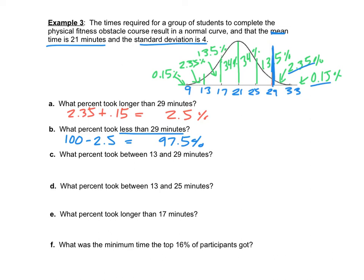What percent took between 13 and 29 minutes? Notice that 13 is exactly 2 standard deviations below the mean and 29 is exactly 2 standard deviations above — so we immediately know that's 95%. For between 13 and 25 minutes, add 13.5 + 34 + 34, which totals 81.5%.